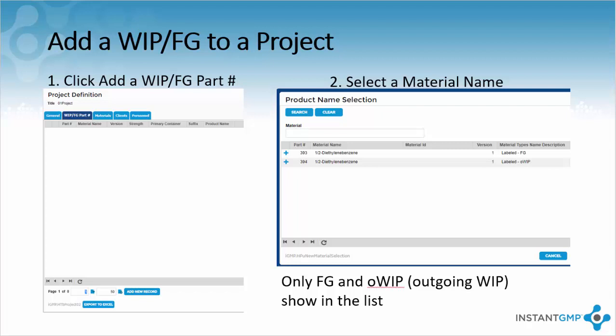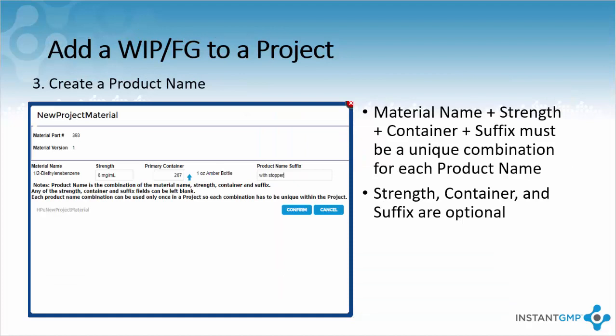A second menu will pop up and from here you can select which product will be produced with this project. If your product strength and suffix was not selected when the material was created, it will allow you to add them as the product name along with a tertiary modifier, which is a primary container. These modifiers will be a part of the product name when adding the material to inventory after a batch record has been completed. Once the WIP slash final good has been added to a project, we can now create an NPR.